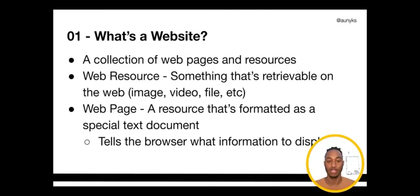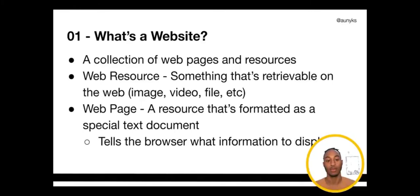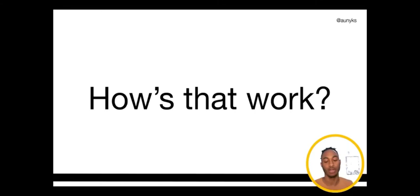A website is a collection of web pages and resources, where a resource is anything that is retrievable on the web. It could be a downloadable file, a video, an image — anything you've seen through Safari, Chrome, Firefox, or your favorite browser. A web page specifically is one of those resources, formatted as an HTML document, and it tells the browser exactly what information to display and how to display it.